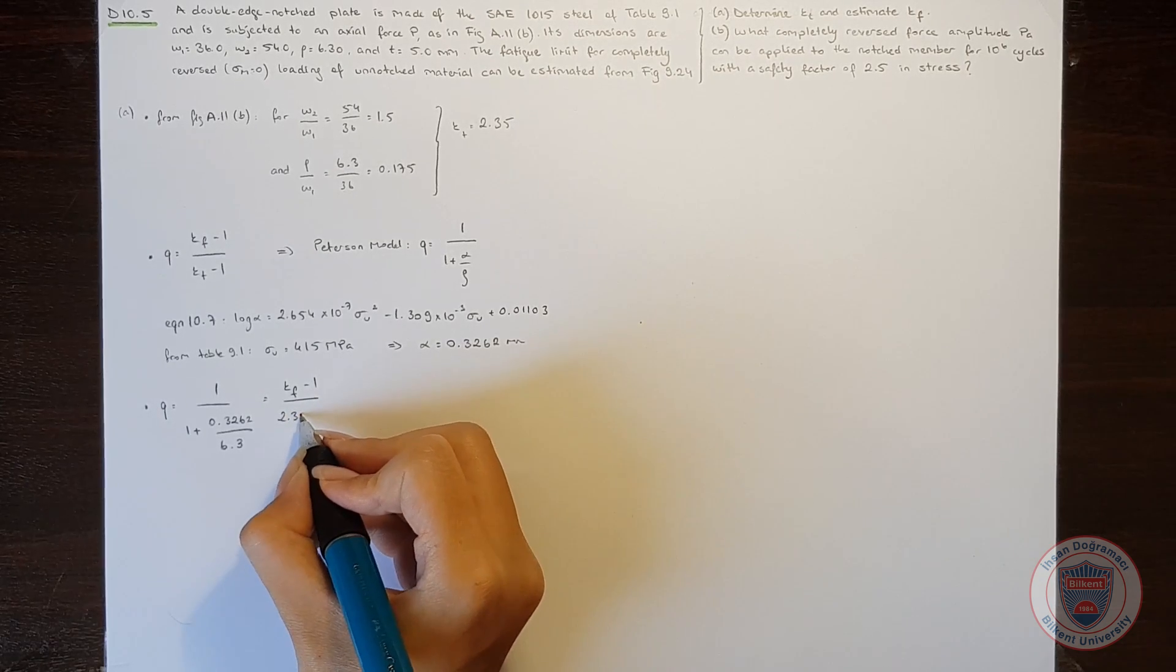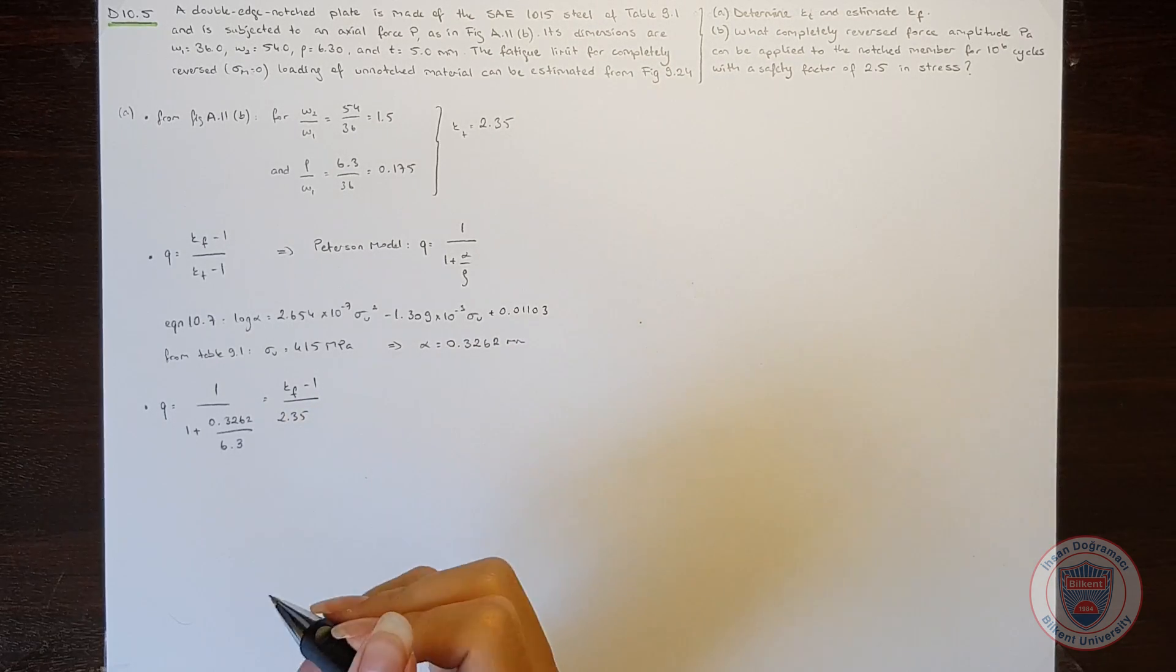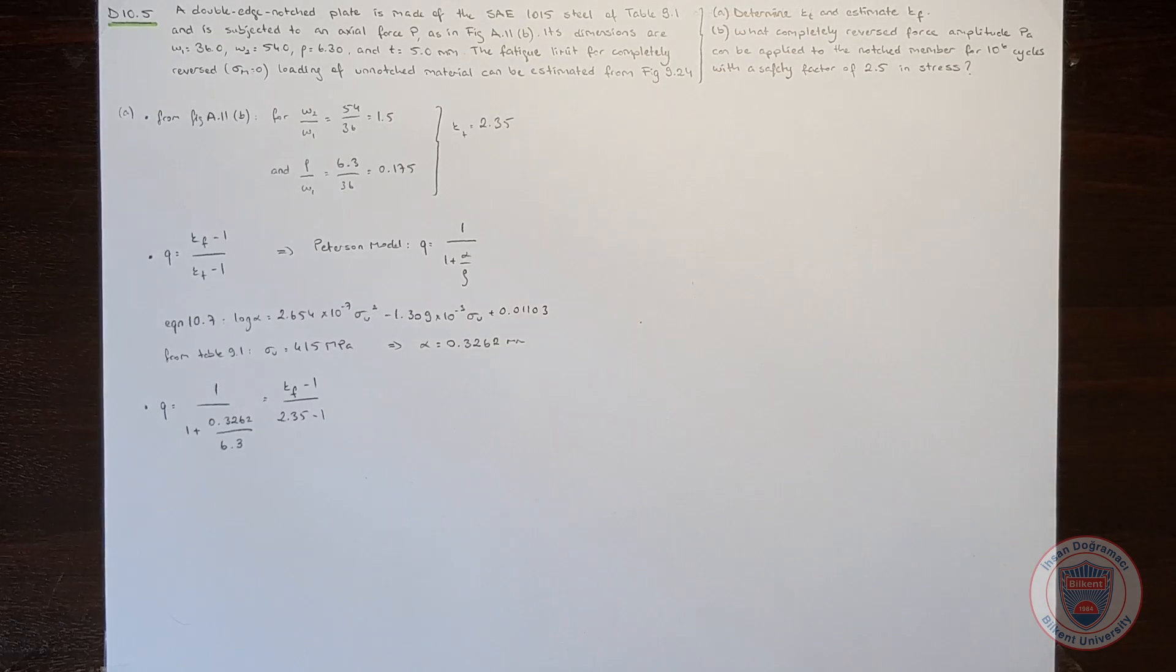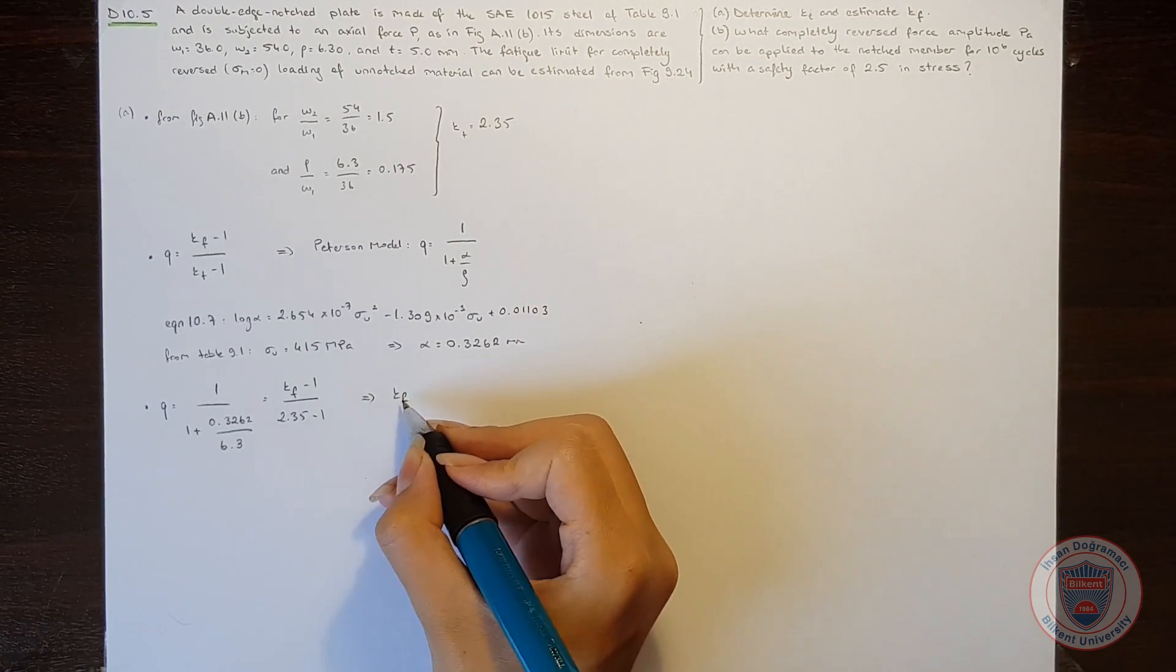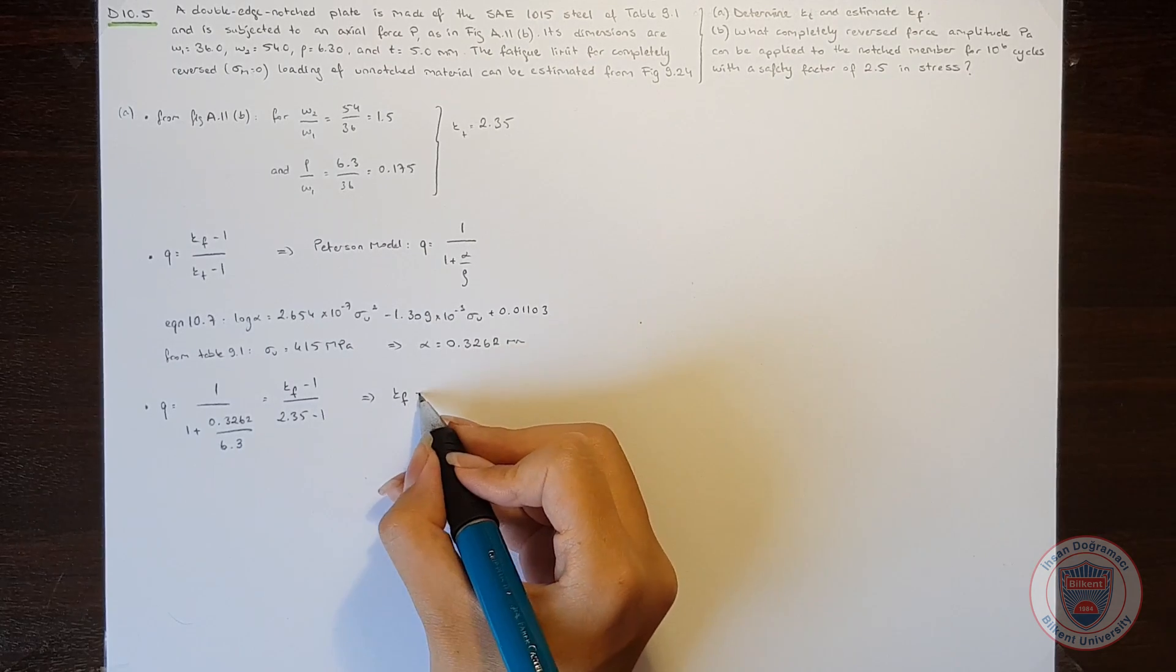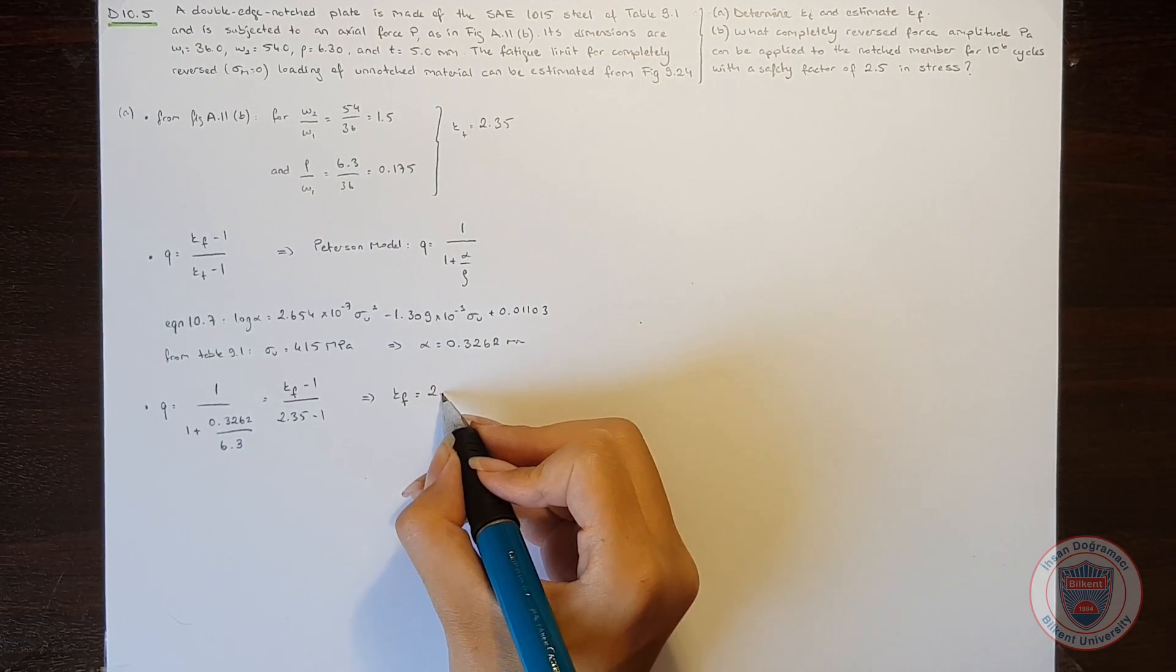And it will be equal to the fatigue notch factor minus 1 over 2.35, which is the stress concentration factor minus 1. And we will get the fatigue notch factor is equal to 2.28.